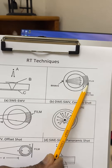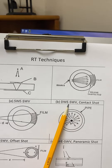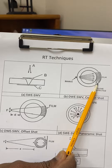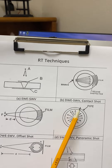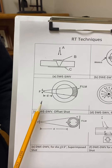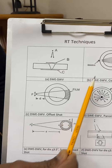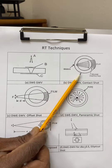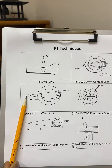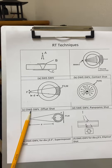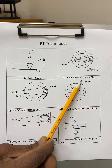The source is here and the film is here, so the radiation goes through two walls — we call it double wall exposure — but we are only viewing one wall, so it is called single wall viewing. The third technique is also for pipe and is an offset technique, a modification of the previous one. When we cannot achieve the correct geometrical unsharpness, we offset the source to get the right UG. It is still double wall exposure single wall viewing, and the two variants are called the offset shot and the contact shot.